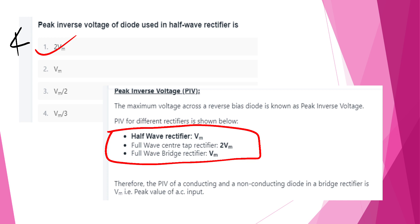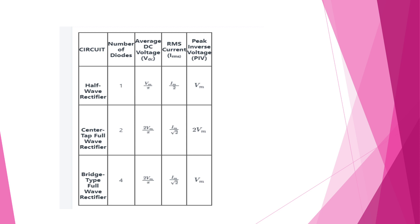Summary table: Half-wave rectifier — 1 diode, VDC = Vm/π, RMS current = Im/2, PIV = Vm. Center-tap full-wave rectifier — 2 diodes, VDC = 2Vm/π, RMS current = Im/√2, PIV = 2Vm. Bridge full-wave rectifier — 4 diodes, VDC = 2Vm/π, RMS current = Im/√2.